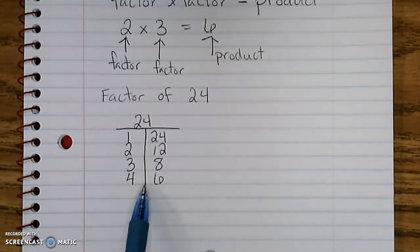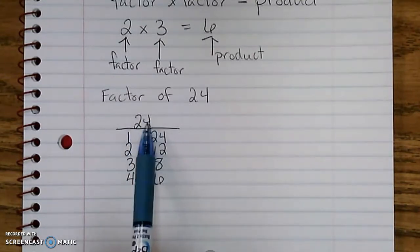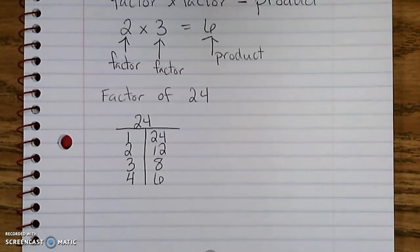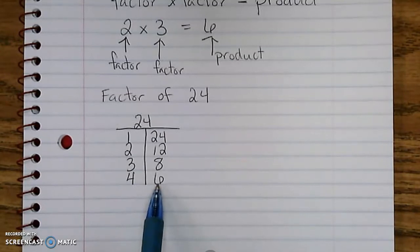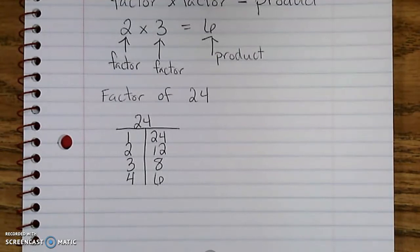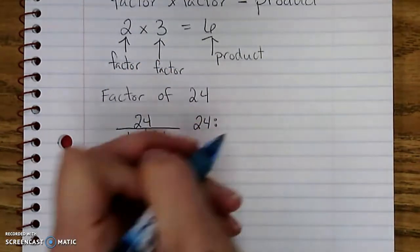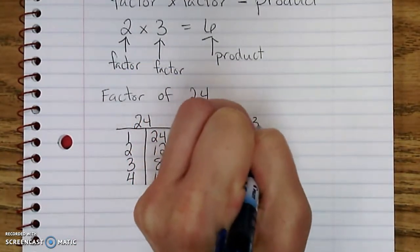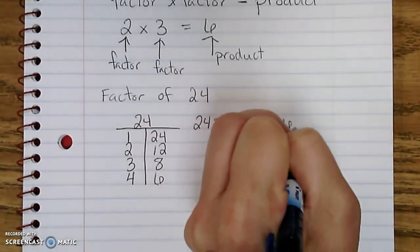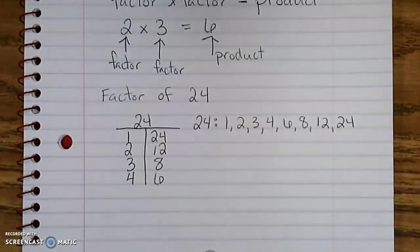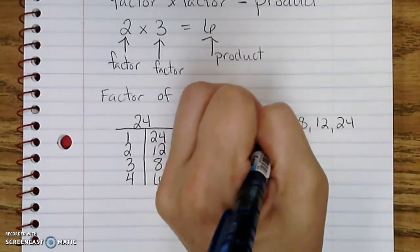Then I think about 5. Is 5 a factor of 24? No, products of 5 have to end in 0 or 5, and that ends in a 4, so that can't be a product of the factor 5. Then I get to 6. We already have 6 here, so I know that I am done with all the factors of 24. If they ask me to list them, I would list them in order: 1, 2, 3, 4, 6, 8, 12, 24. Sometimes they call this list the rainbow because you make little rainbow arcs when you connect the pairs.